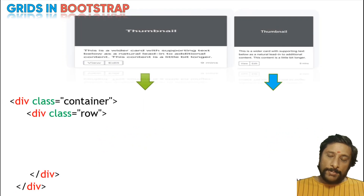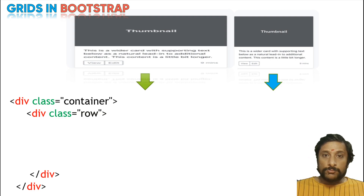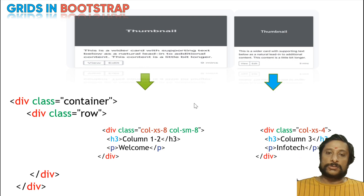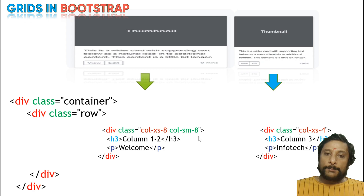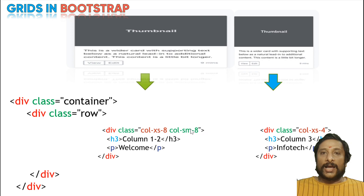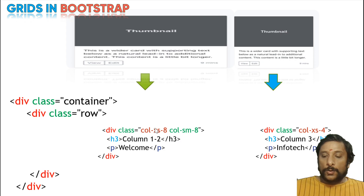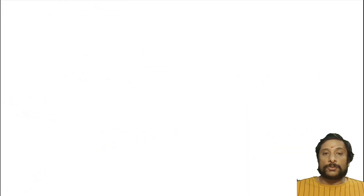If you want this compatibility to work on iPad also, you need a small code change. Indicating that if it is a mobile, 8 size; for your iPad (sm), 8 size; for the laptop (md), medium — col-md-8; for desktops, large — col-lg-8. You can specify how it should work per device. In each device, you can use these keywords — xs for mobile, sm for iPad, md for laptop, lg for desktop — to define how the website should be displayed.